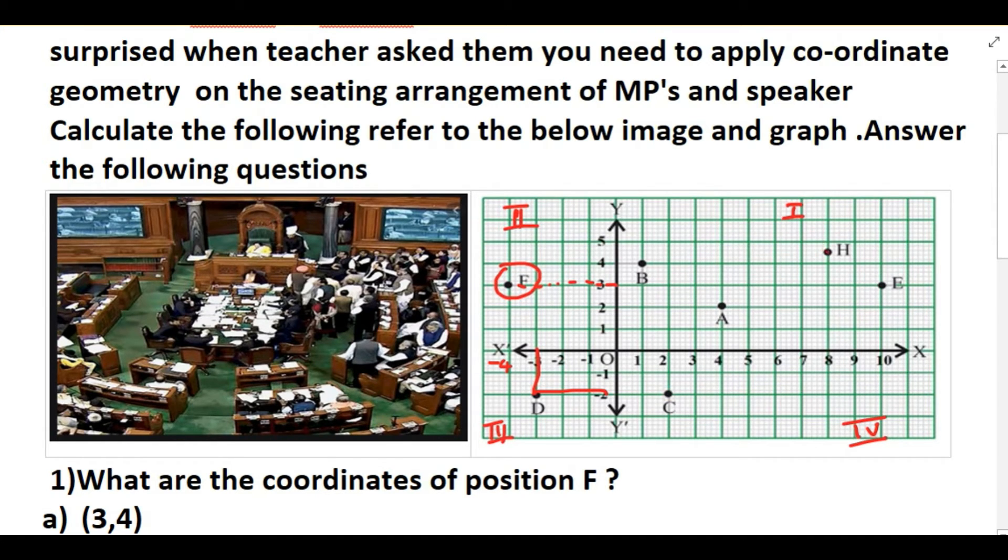So we need to find the position of H. H is nothing, 8. You can see here, first you should write the x coordinate, so 8. And it is between 4 and 5, so we can write as 4.5.